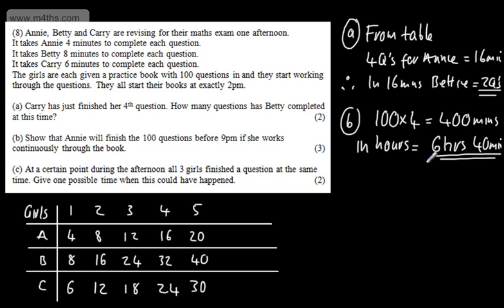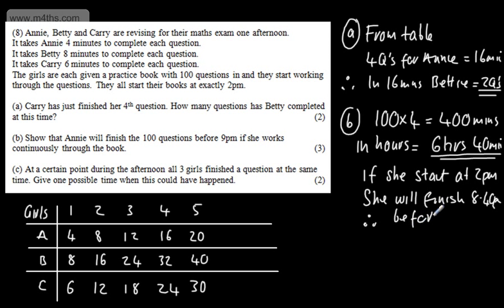If she starts at 2pm, she will finish at now 8.40pm. Therefore, before 9pm. So that's my answer. As stated, you might want to show how you've done this in hours. It's 6 hours and 40 minutes, that's 400 minutes. Therefore, she will be completed.